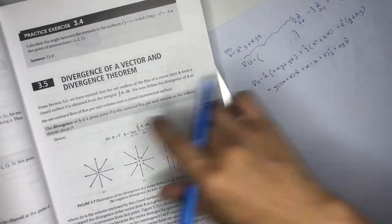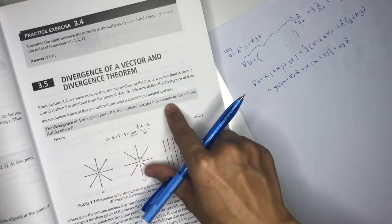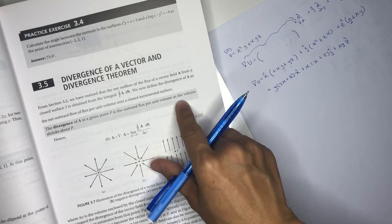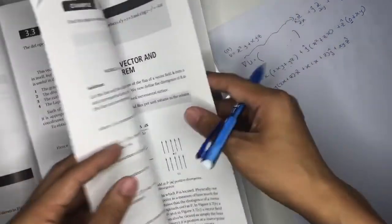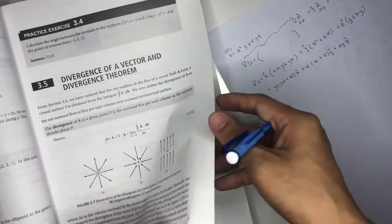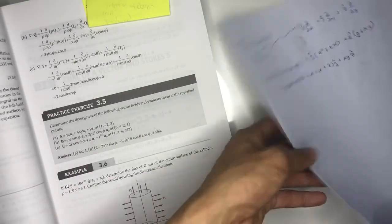Now we go to the page where we discuss the divergence. The divergence of A at a given point P is the outward flux per unit volume as the volume shrinks about P.